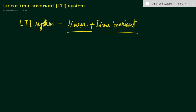So what is a linear system? A system is said to be linear if it follows the superposition property. And what is a time invariant system? A system is said to be time invariant if, for some input time shift, it produces the same time shift in the output signal — then it is said to be a time invariant system.